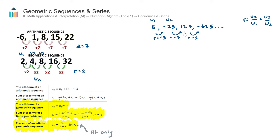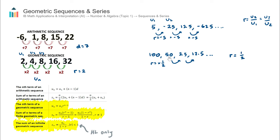Another type of geometric sequence is: 100, 50, 25, 12.5, and so on. The common ratio here is found by asking how we get from 100 to 50 — we divide by 2, or equivalently multiply by one half. So the common ratio is one half. When we have a fractional common ratio, the terms will decrease over time.